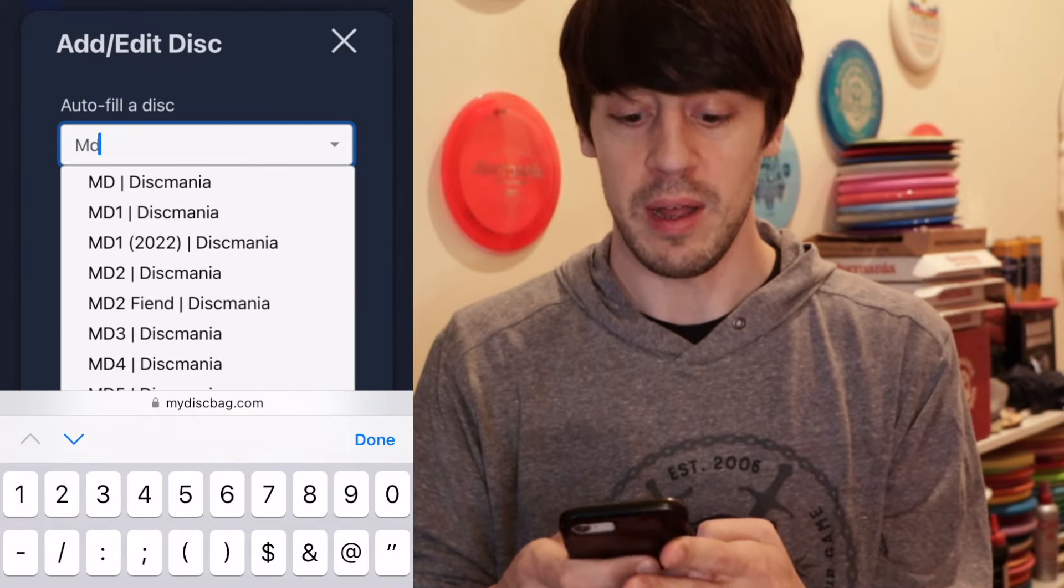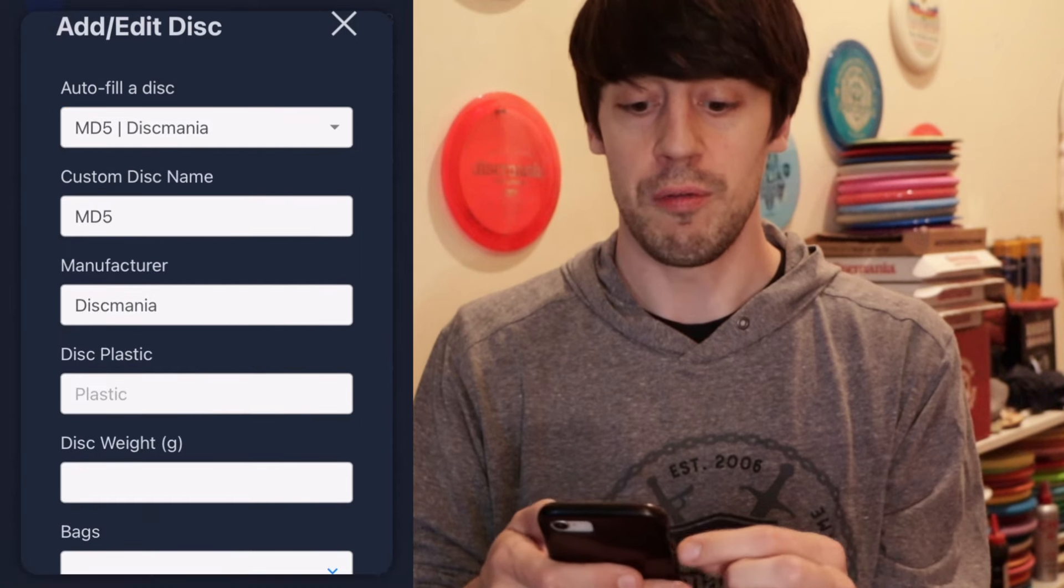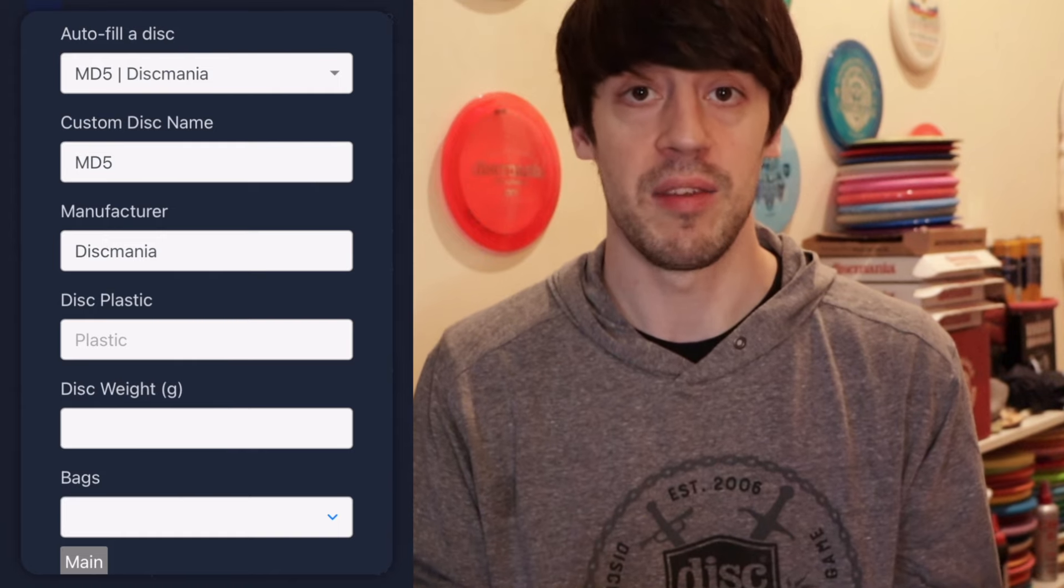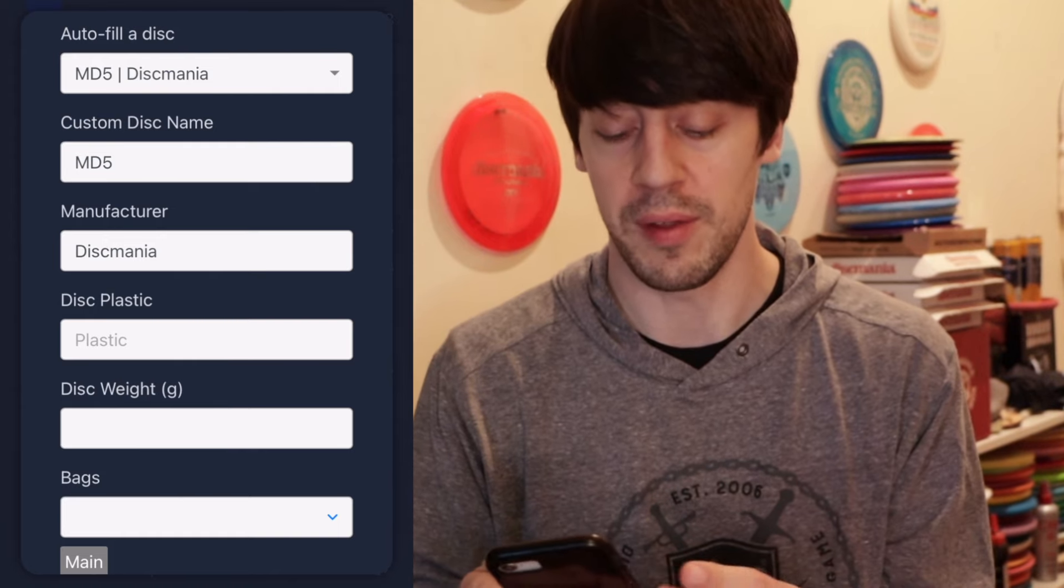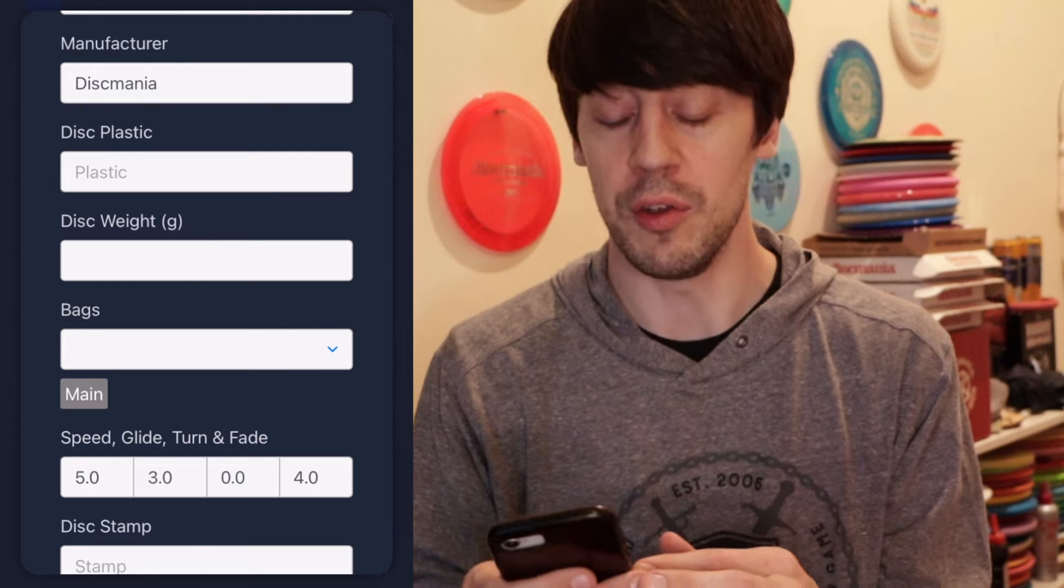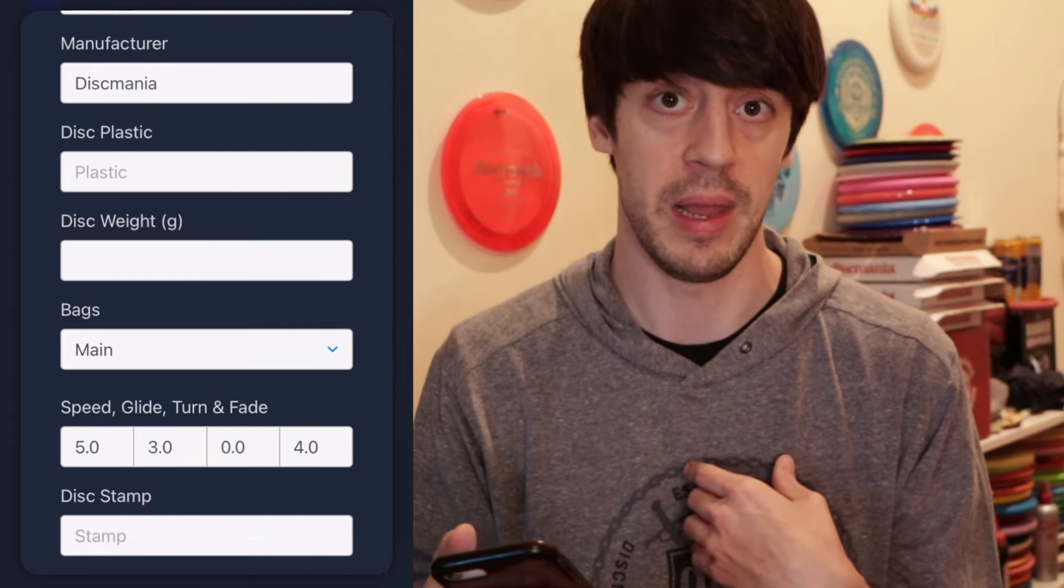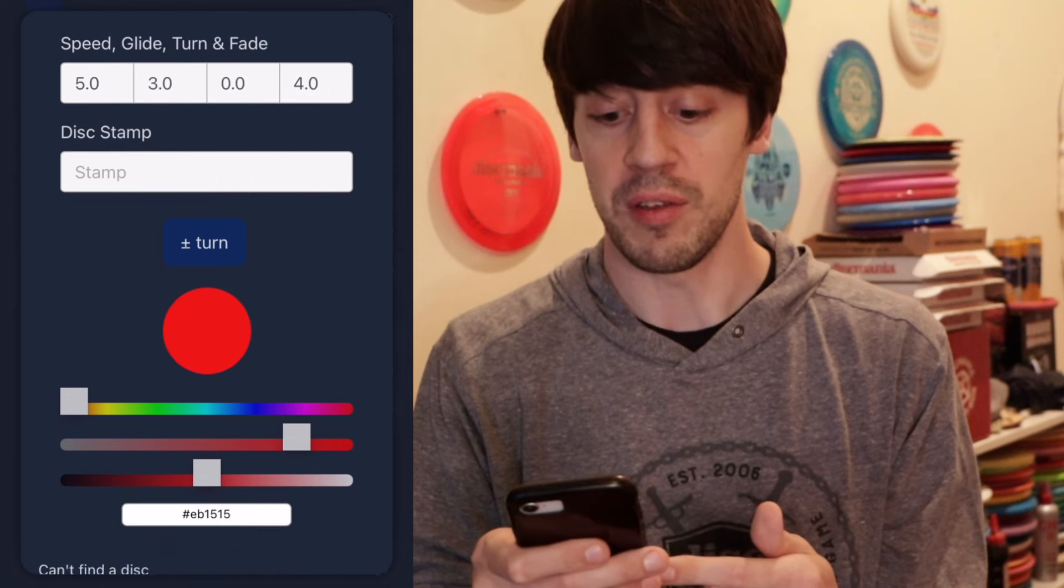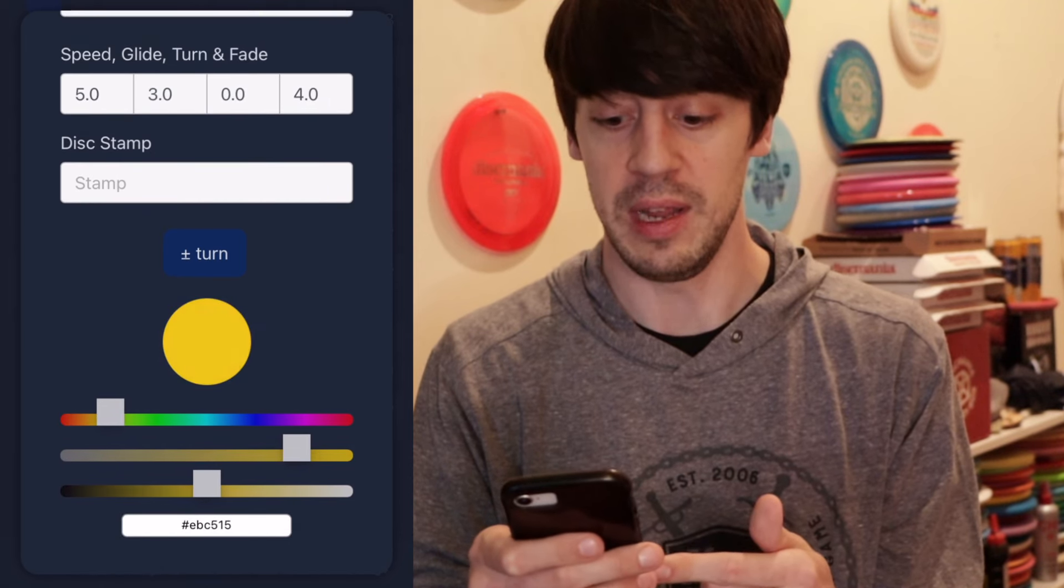You put the name of the disc in, say it was an MD5, most of it gets autofilled, the name, the manufacturer, but then you get to disc plastic, you can do C line, S line, swirly, whatever you want to type in. You can put the weight, you could even choose what bag it's in, in this case I'm going to hit main, that's the only bag that I have. You can even choose the lamp, you can adjust the color, so my MD5 is like a neon yellow.